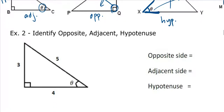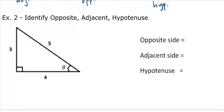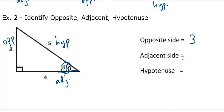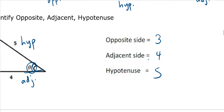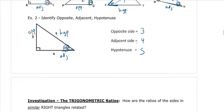Example two: identify the opposite, adjacent, and hypotenuse — or the length of each. Going to my theta reference angle, my hypotenuse is here and my adjacent side is down here touching the angle, and the opposite is across. If I label the lengths, my opposite would be 3, my adjacent side would be 4, and my hypotenuse would be 5. So it's as simple as that.